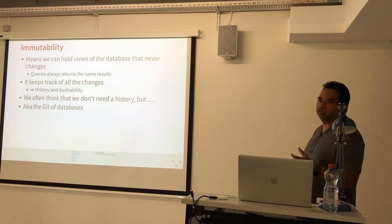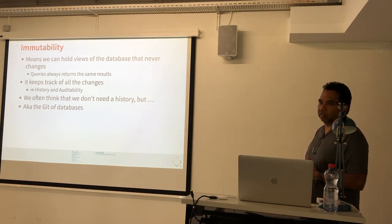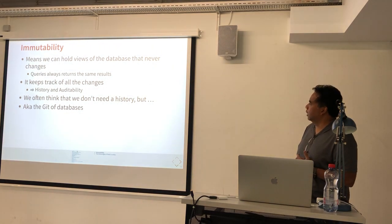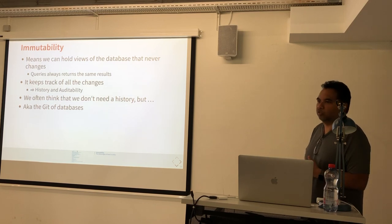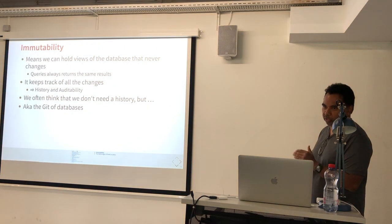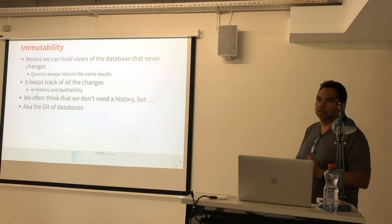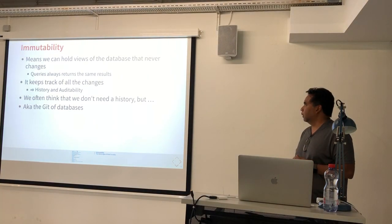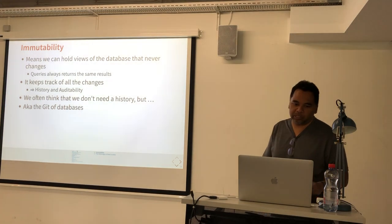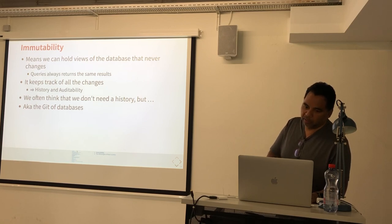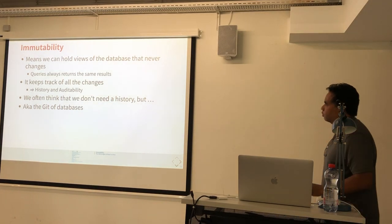Also because of immutability, Datomic keeps track of all changes, so you have a complete history of what happened in your database for free, plus auditability. In many projects I've participated in, you might think you don't need the history, but at some point you realize it would have been great to have the history of what happened to a row. With a typical relational database you have to implement that yourself. With Datomic it's just there. Because of this immutability property, it's often known as the Git of databases — same principle: immutability, and you can fork and create another version of the database.